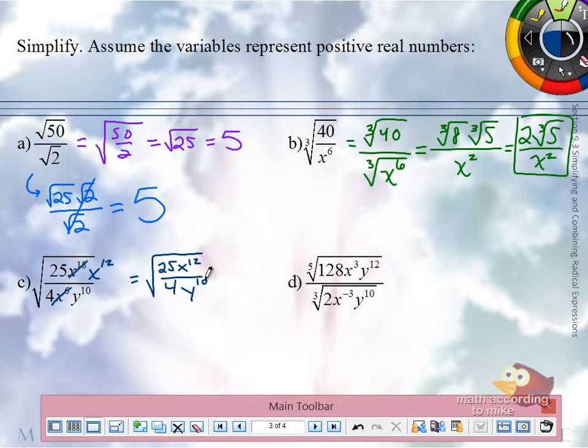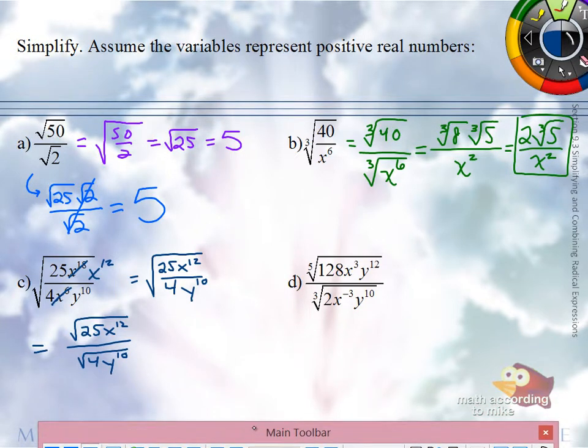If anything else reduced, we would do that at this stage, but 25 and 4 have nothing in common, and there's no y's upstate. So just like D, we will break this up into two parts. And then if you want to break it up again using the product rule, that's fine. This step is optional. And even though we have square roots, by being told variables are positive real numbers, we don't have to worry about absolute values.